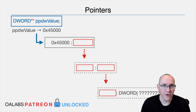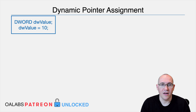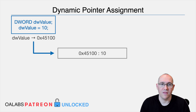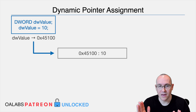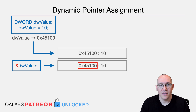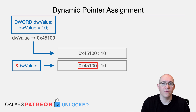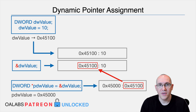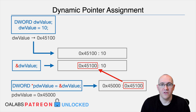How do you actually make your pointer point to a variable? In our example, we have a variable dwvalue of type dword, and we've assigned 10 to it. At compile time that variable has been given address 0x45100. So in memory, address 0x45100 has 10 in it. If you use the ampersand operator in your code, that means get the address of the variable, not the variable contents. So if you say give me the address of this variable and assign it to a pointer, your pointer now has the address of the variable. We have a dword pointer called pdwvalue being assigned the address of dwvalue, so now dereferencing it would give you the value 10.